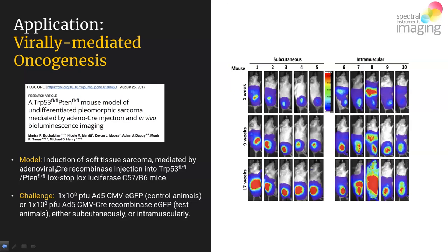This adenoviral particle also expressed the luciferase gene, so that any successful transduction of muscle cells by the viral particle could be monitored through luciferase light reporter function. A secondary aspect was to determine the best route of challenge to generate the desired sarcoma. Testing either subcutaneous or intramuscular challenge, investigators found both routes were equally effective in generating sarcoma, as observed by luciferase reporter function at week 17. The essential takeaway is that it is readily possible to induce cancers of interest in mouse model systems using virally mediated oncogenesis techniques, and that this process can be monitored through luciferase as an optical reporter.